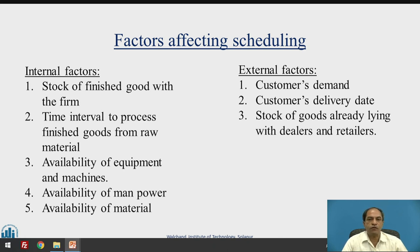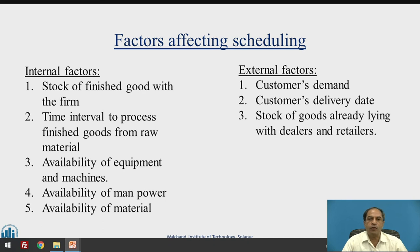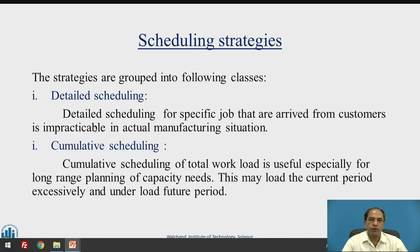There are also external factors beyond the control of the organization, such as customer demand — uneven and unpredictable demand. Customer delivery dates are another challenge; customers sometimes ask for delivery before your lead time or cycle time. Additionally, stock of goods already lying with dealers and retailers is a factor beyond control. The stocks at various work centers and depots affect your scheduling, as we cannot predict when that inventory will be sold.